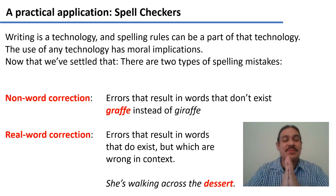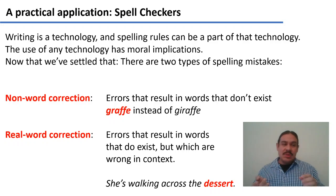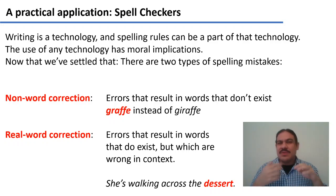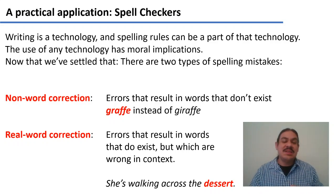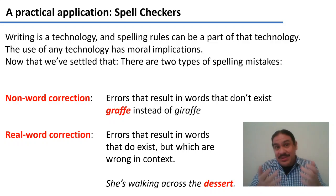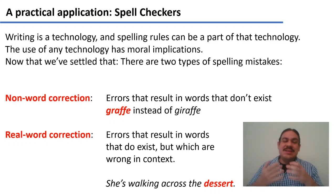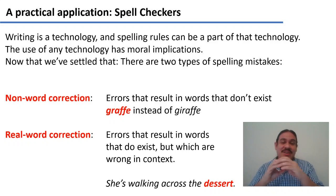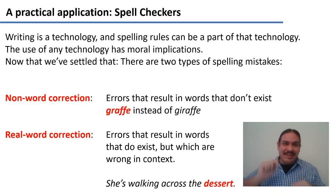Errors can also come from real words — for example, typing a word that does exist but is out of context. For example, in the sentence 'she's walking across the desert,' what it actually says is 'she's walking across the dessert' with two s's. So dessert does exist in English, it's just not how it should be written right there.